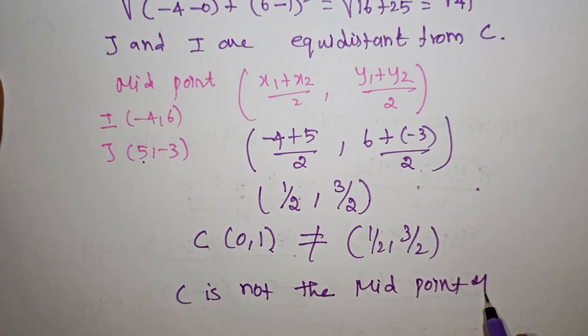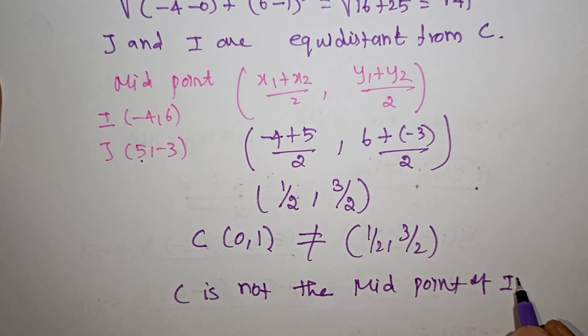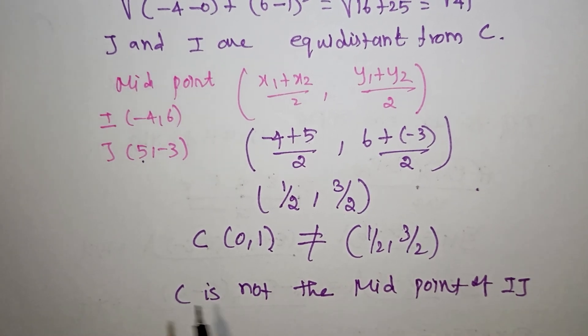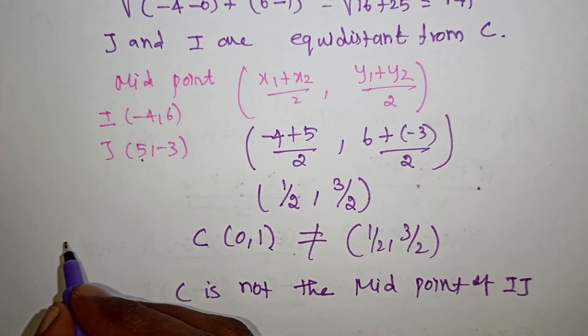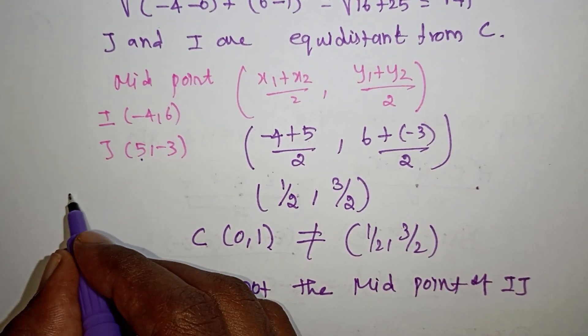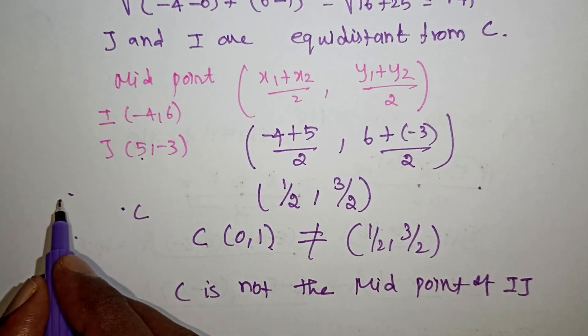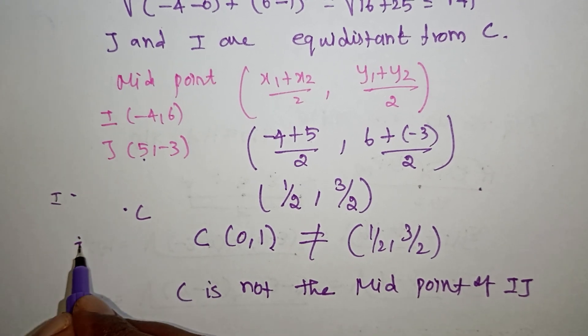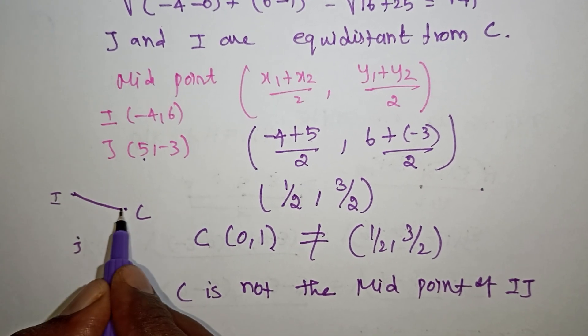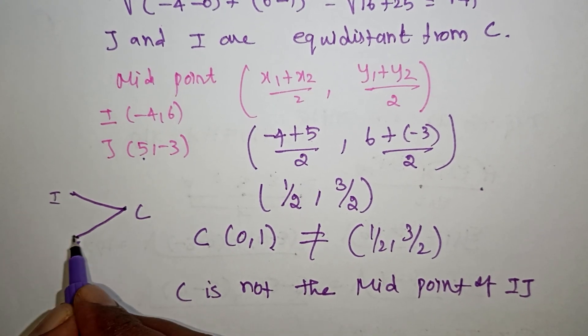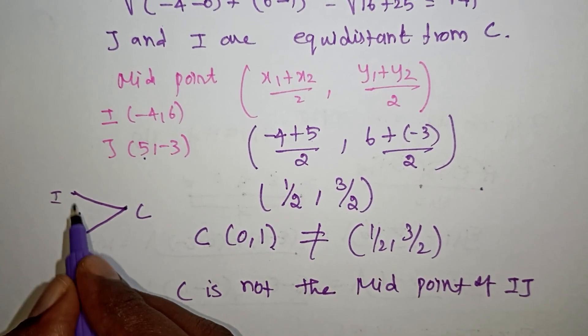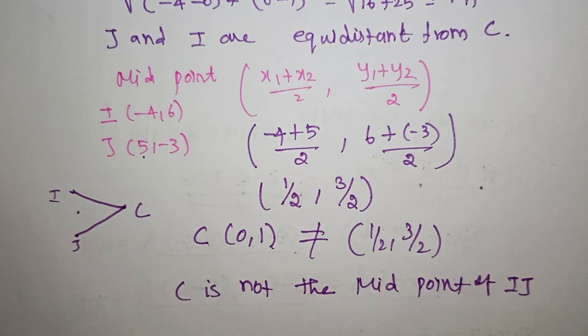To summarize Question 3: C is the midpoint of IJ, and I, J are equidistant from C — both conditions are verified. The distances CI and CJ are equal, confirming C is indeed the midpoint.